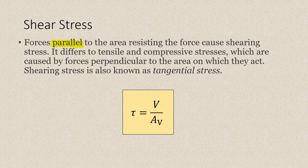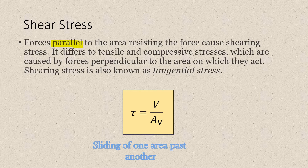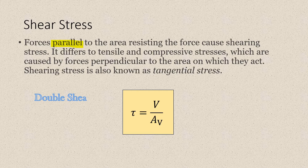In this video, we'll tackle the second type of stress, which is Shear Stress. In shear stress, we are interested in the tendency of one surface or area to slide past the other. It is produced by a force parallel to an area, and we have three general types of shear: single shear, double shear, and punching shear.